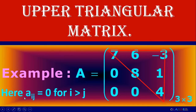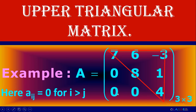In an upper triangular matrix, aij equal to 0 when i is greater than j. So a21, a31, a32 are all zero. Elements on and above the diagonal are not zero. This type of matrix is called an upper triangular matrix.